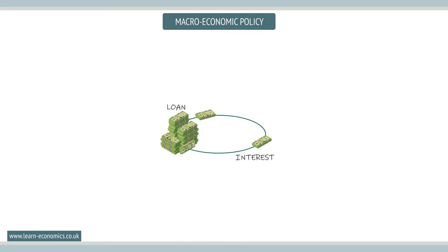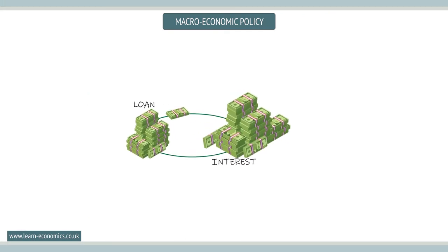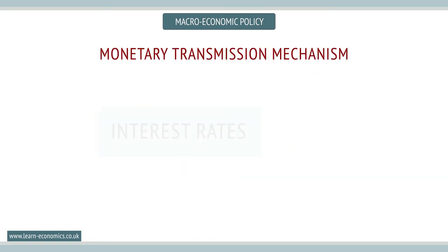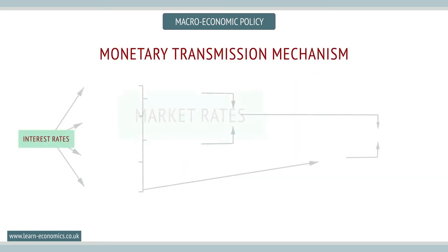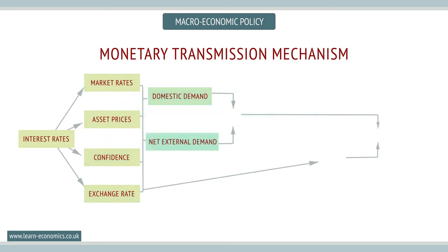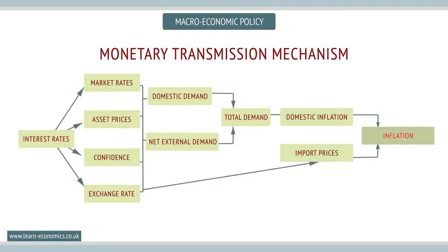Monetary policy involves changing either the price of money — its interest rate — or the quantity of money. The monetary transmission mechanism shows how interest rates work their way through the economy, affecting asset prices, confidence, exchange rates, and finally onto the price level.